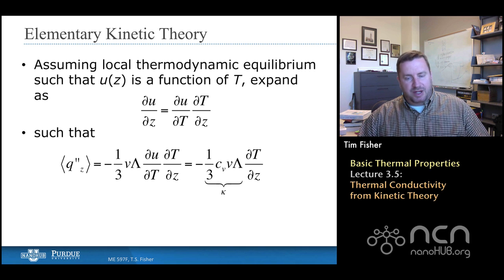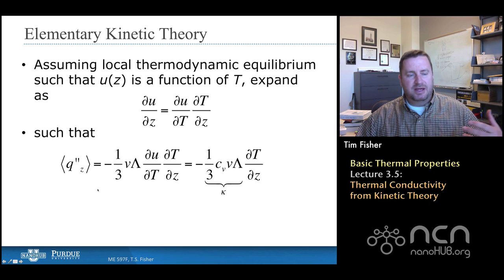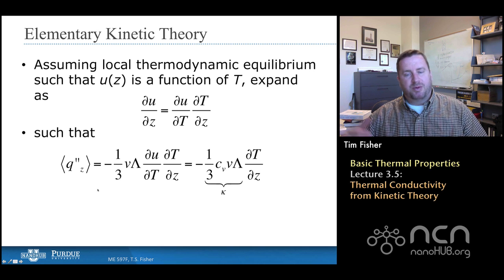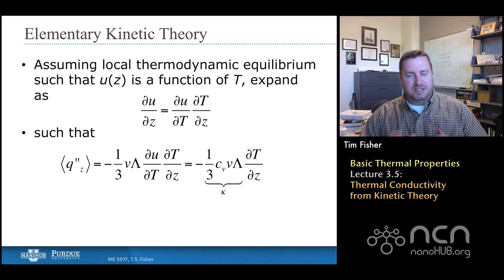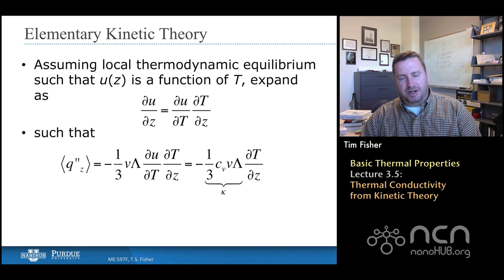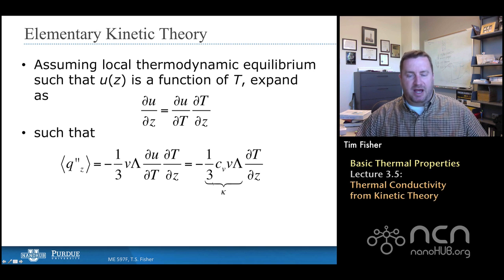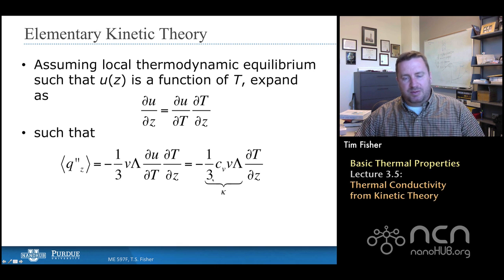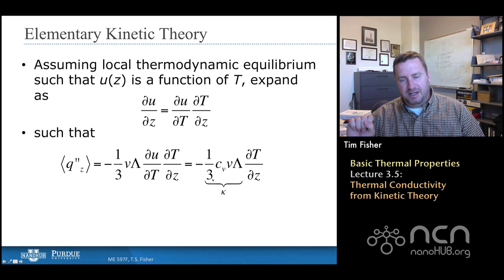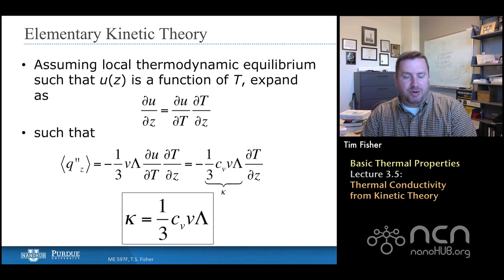But that collection of terms, if we go back to something called Fourier's law, Fourier's law says that the heat flux is proportional to the temperature gradient, and the constant of proportionality is the thermal conductivity. And again, the minus sign out in front just says that heat flows downhill, heat flows from high temperature to low temperature. So this collection of terms, one-third C_v times v times mean free path, is the thermal conductivity.